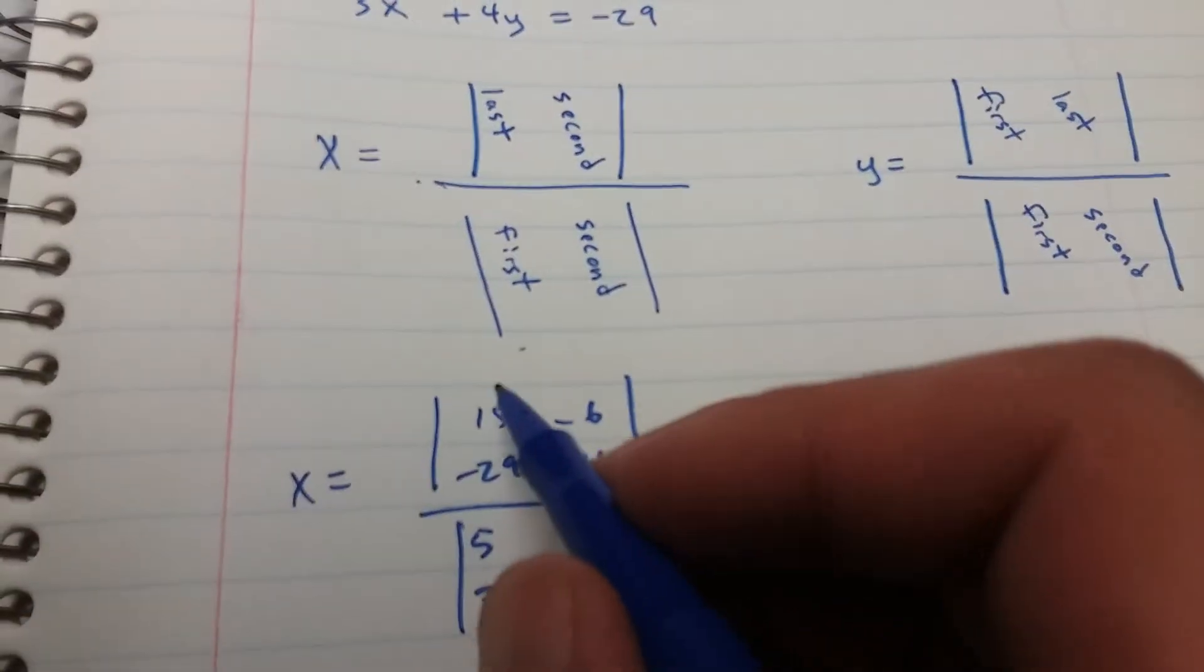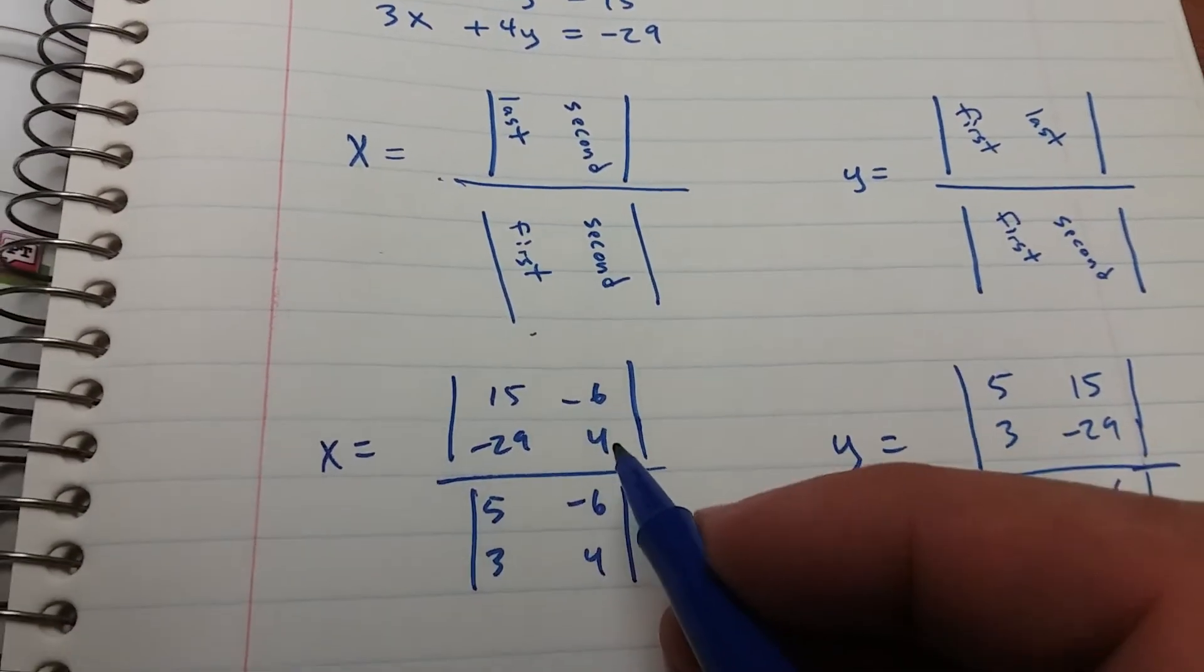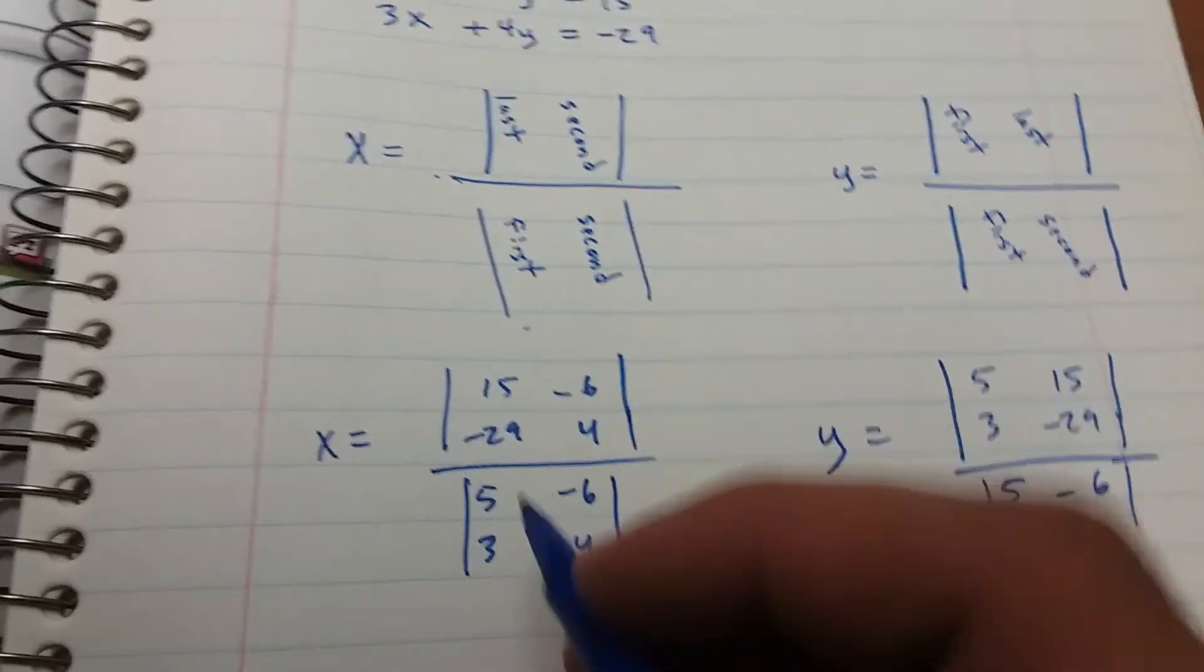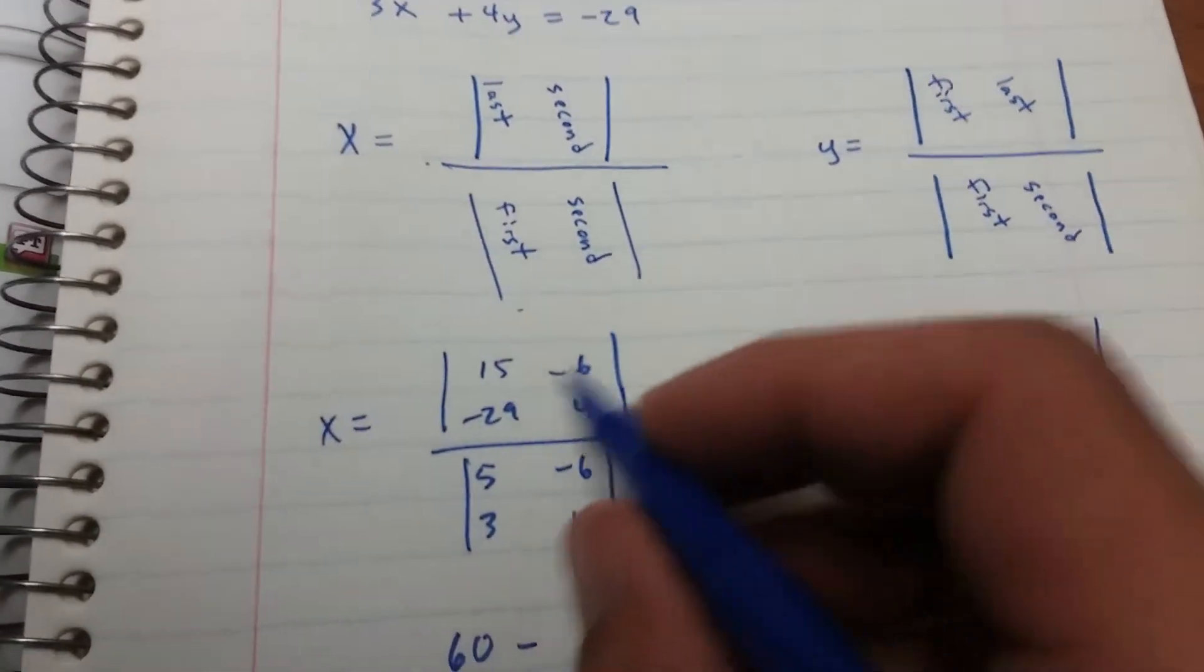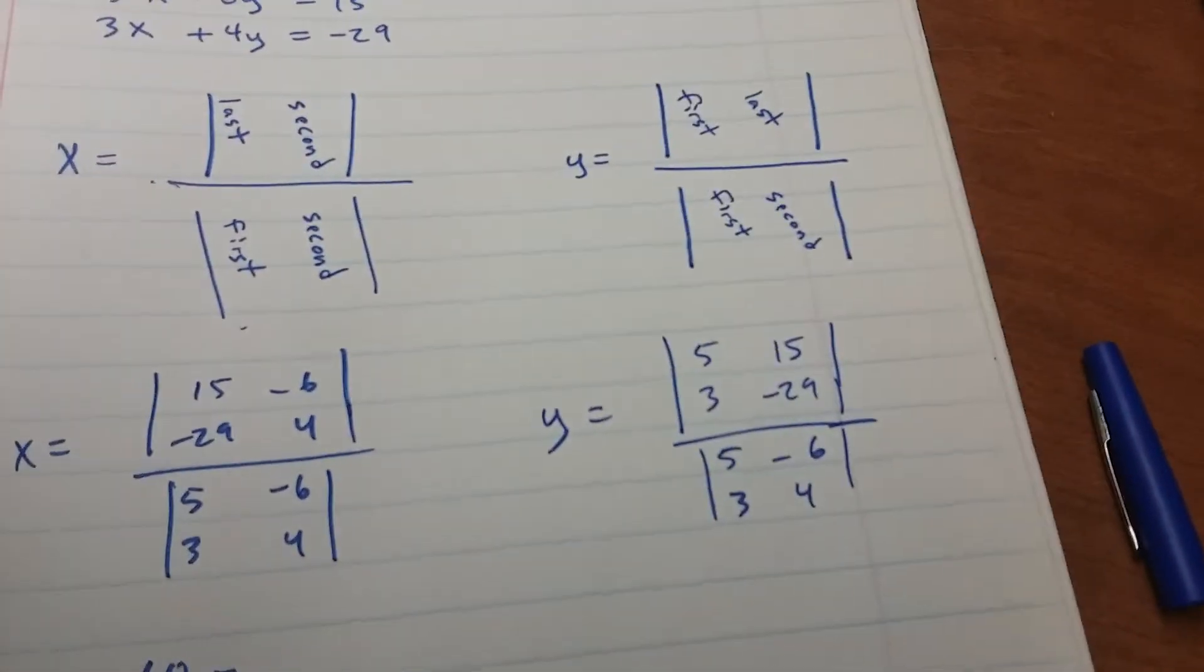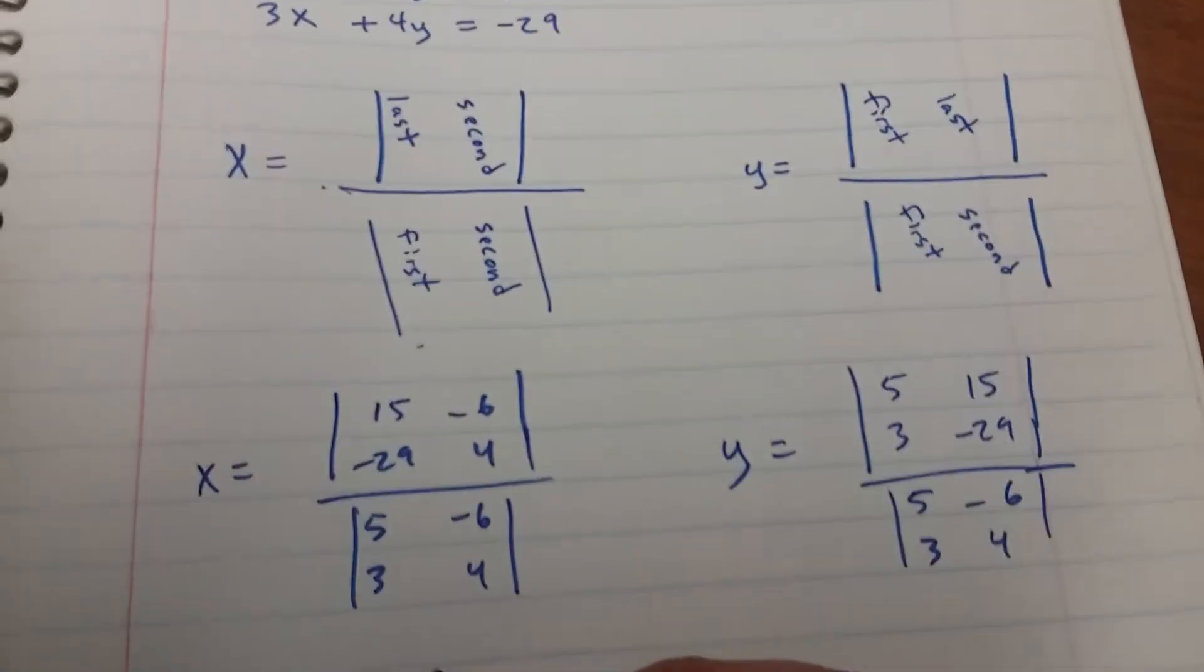So you multiply this way, 15 times 4 is 60, minus 6 times 29, 174.